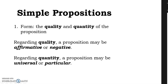If the matter of a proposition consists in the terms, the form consists in the quality and the quantity. The quality of the proposition is determined by whether it is affirmative or negative. The quantity is determined by whether it is universal or particular. The affirmative/negative distinction is determined by the 'is' relationship: if we say x is y, that's affirmative; if we say x isn't y, that's negative. The quantity distinction has to do with how much of x can be said to be y — if all x is y, that's universal; if some x is y or some x isn't y, that's particular.